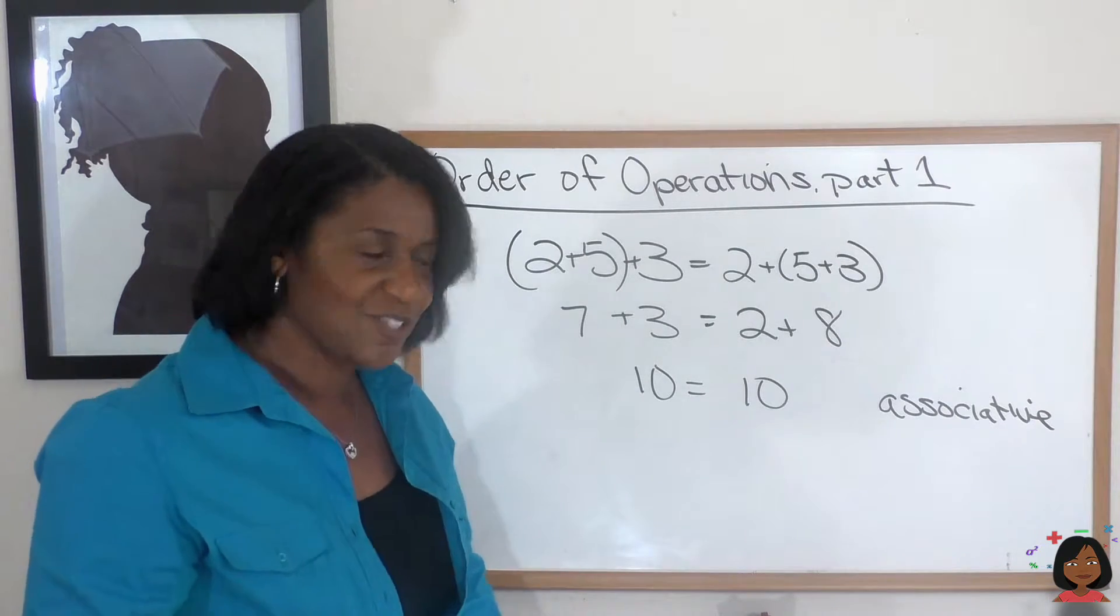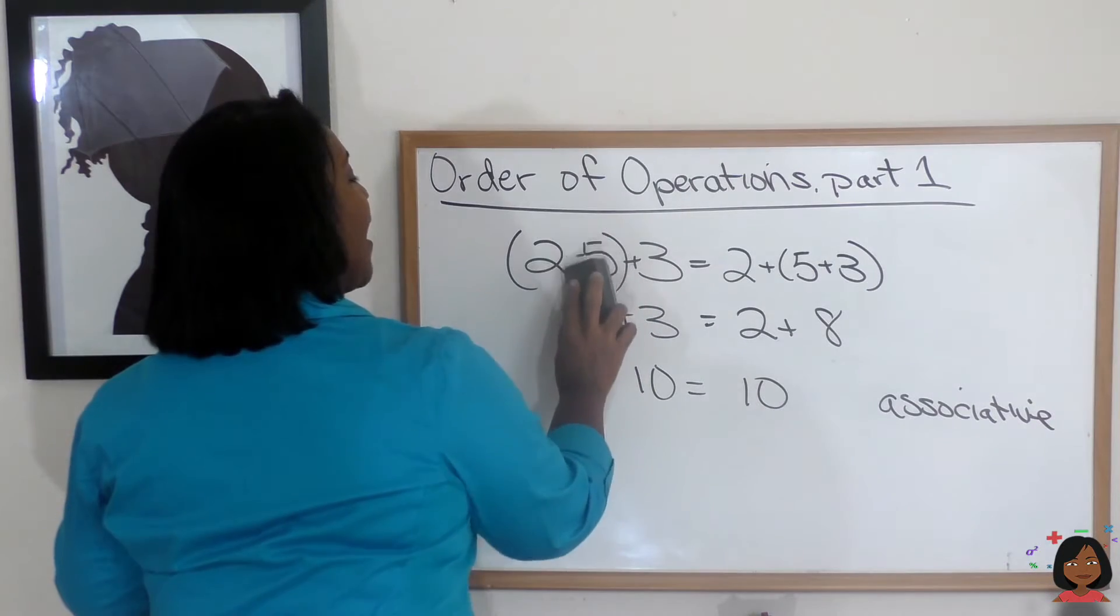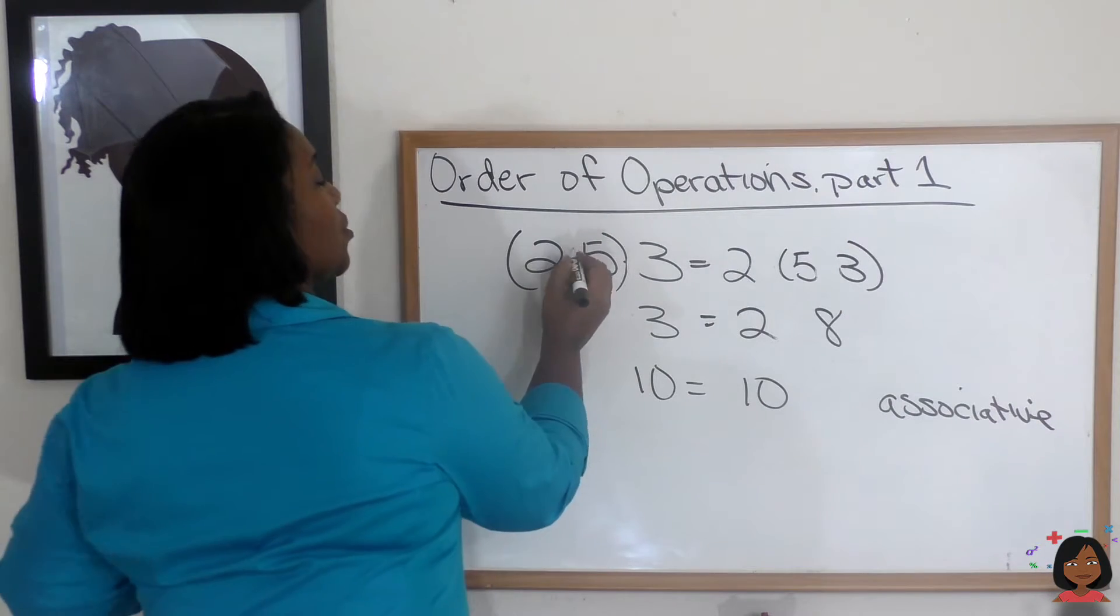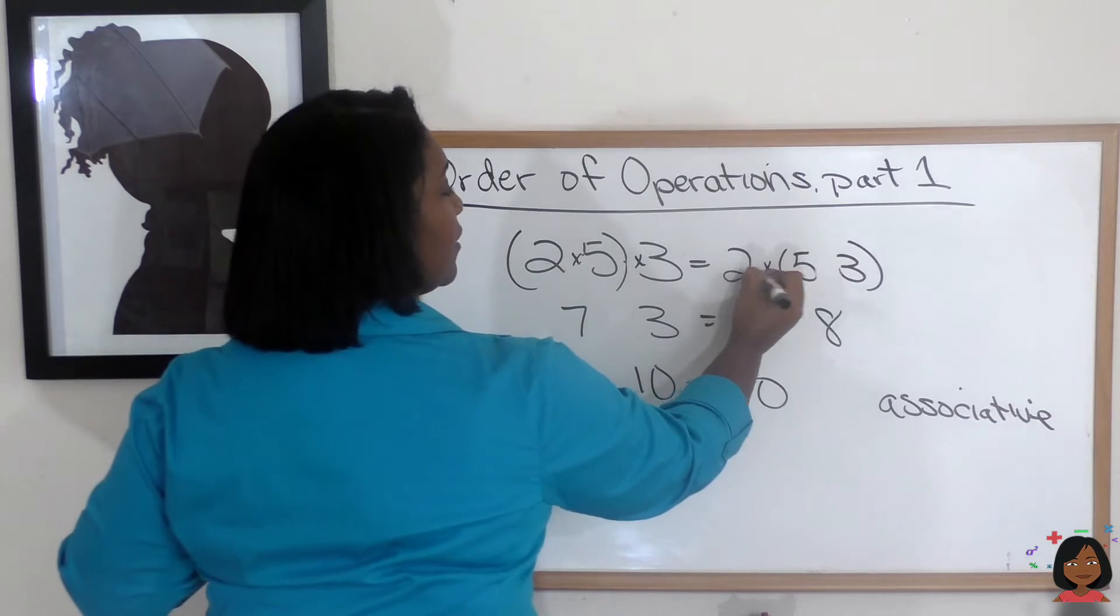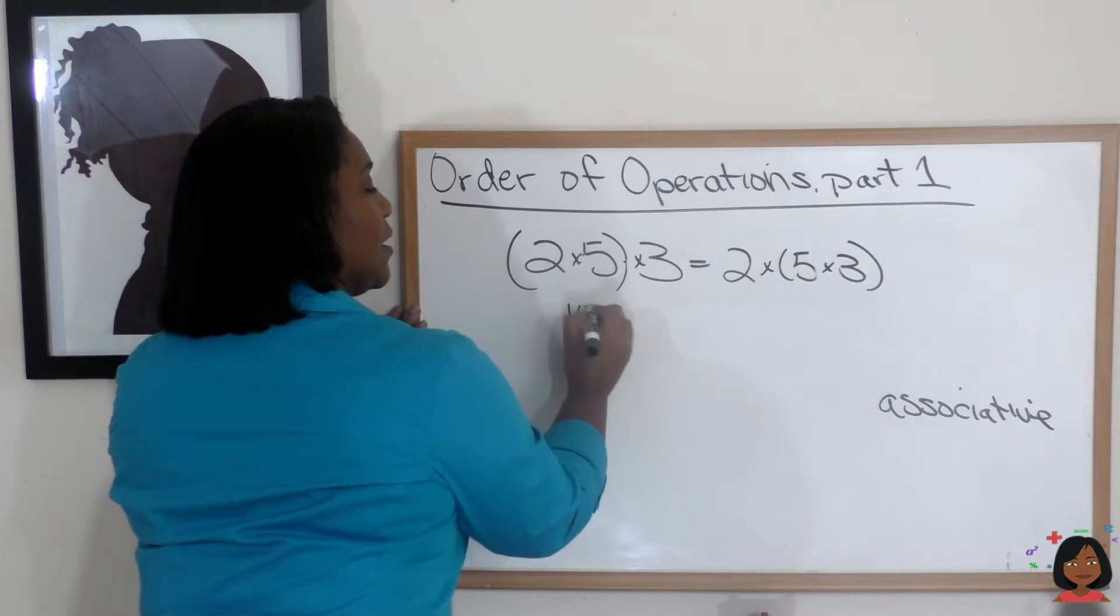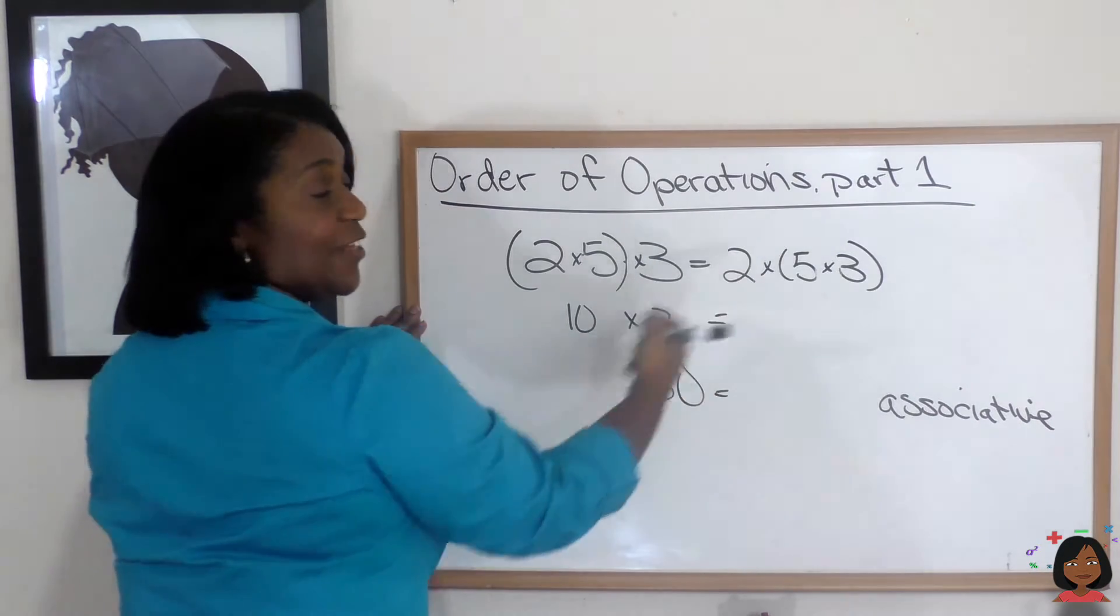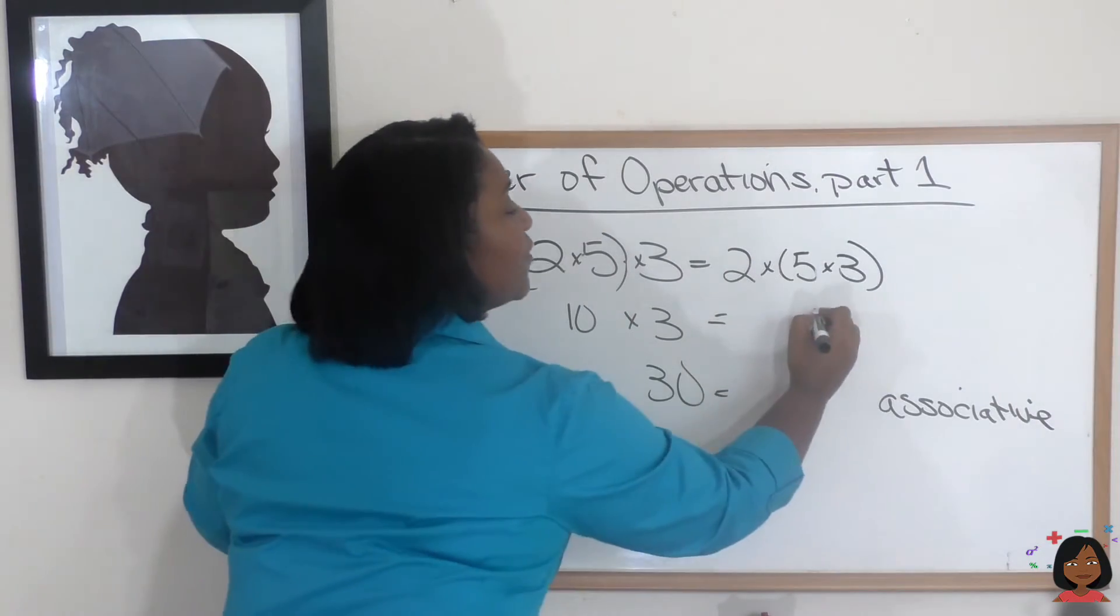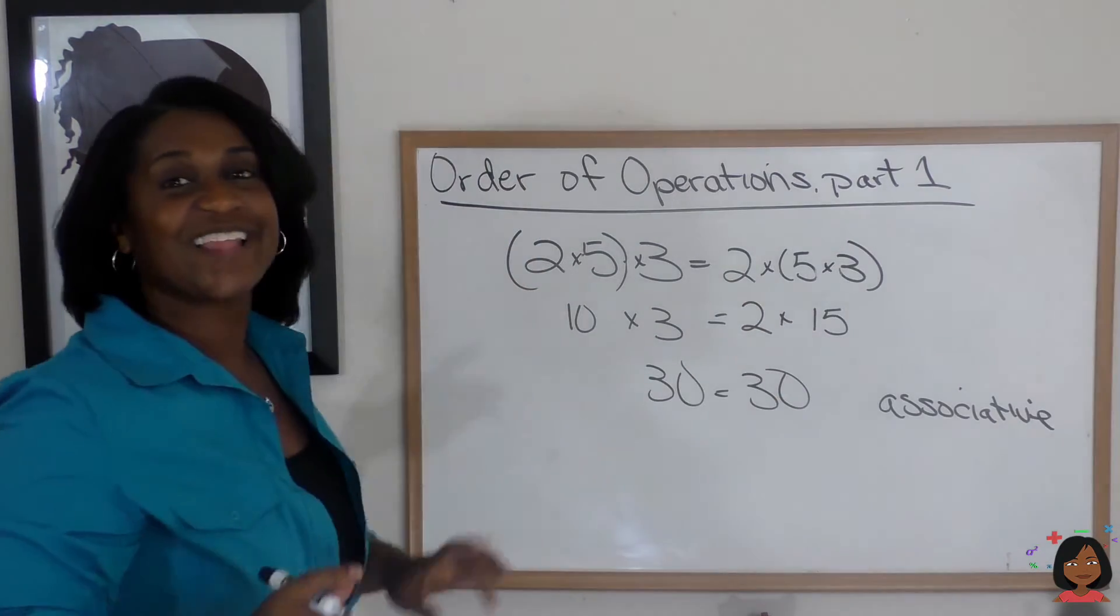What about multiplication and division? Well, let's take these numbers, the same numbers that we have, and we're going to do it just for multiplication. So we're going to do 2 times 5 times 3. Here we go. 2 times 5 is 10 times 3 equals 30 on this side. Let's do the other side. We do what's in the parentheses first. So 5 times 3 is 15 times 2 equals 30. Look at that.